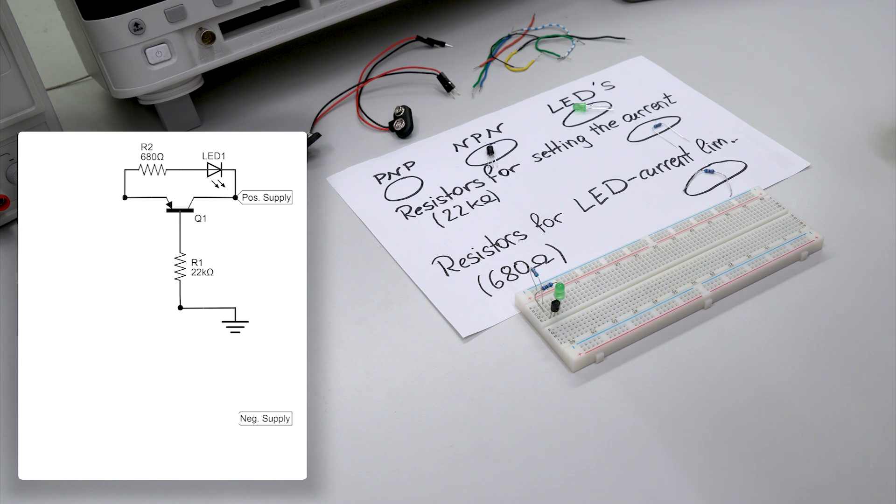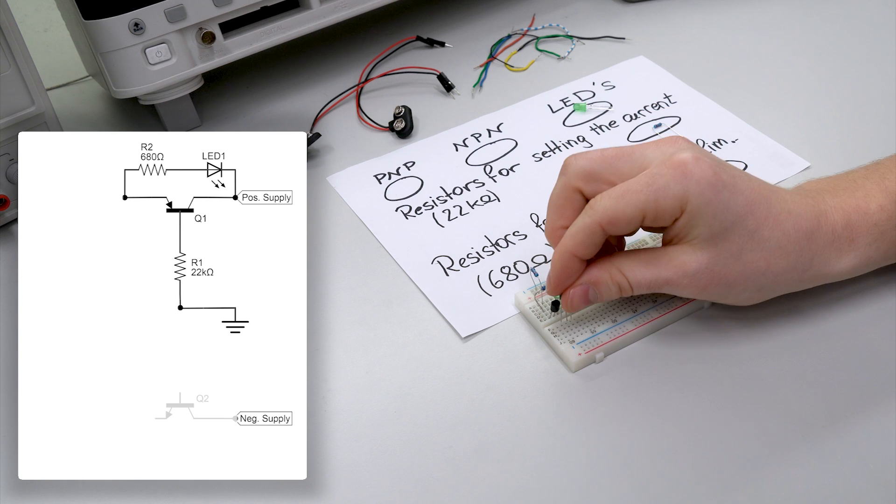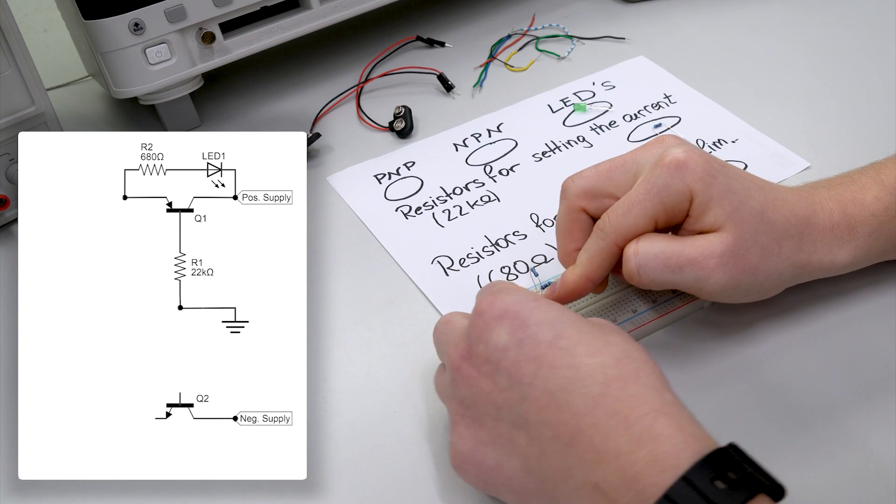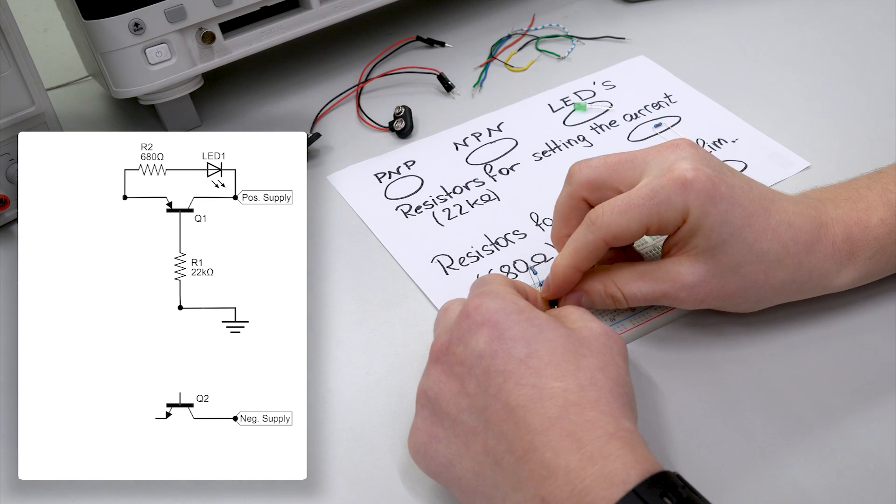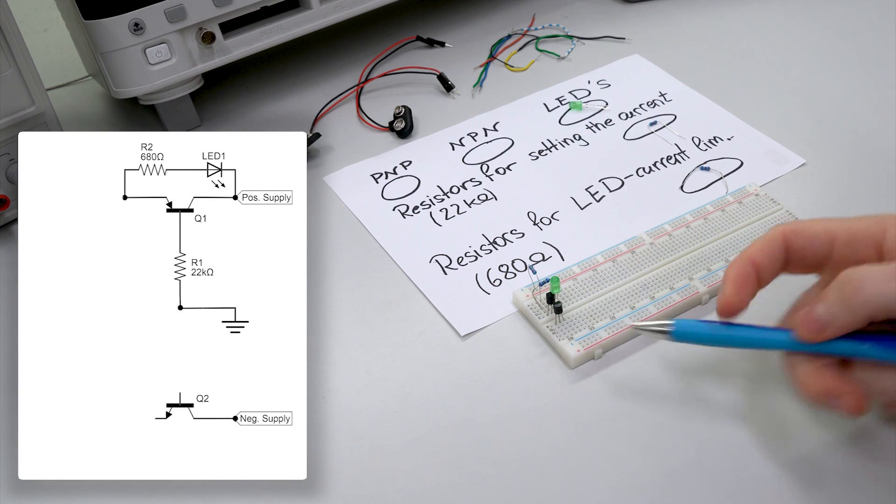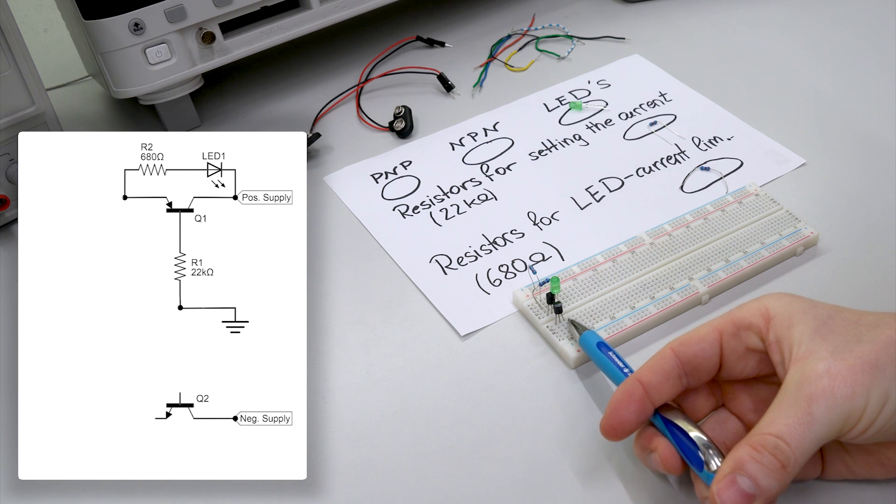The negative supply is pretty similar. We take the NPN transistor. Place it like the PNP transistor. So the emitter is on the most left side, base in the middle, collector on the right.